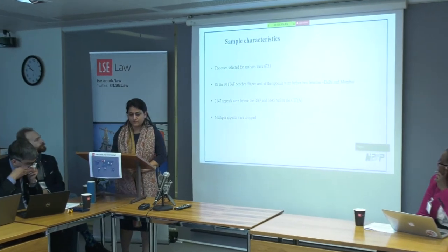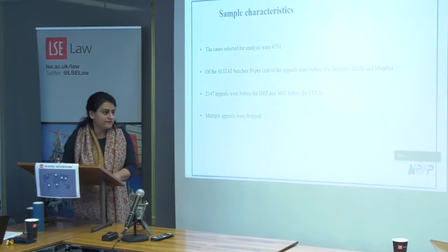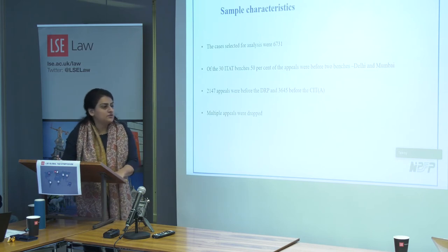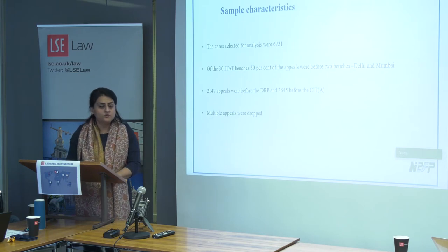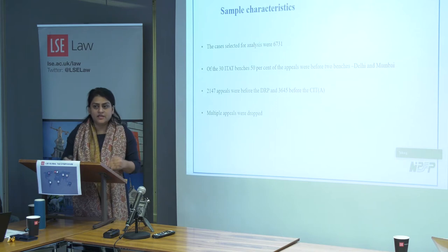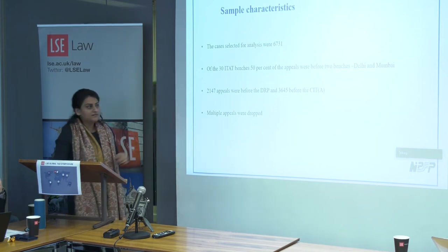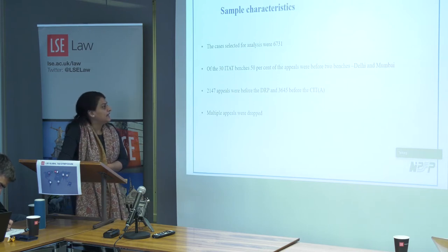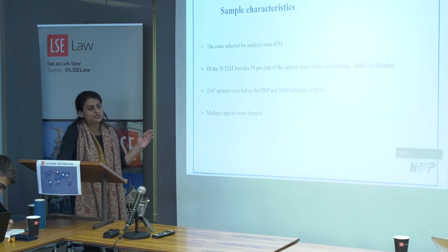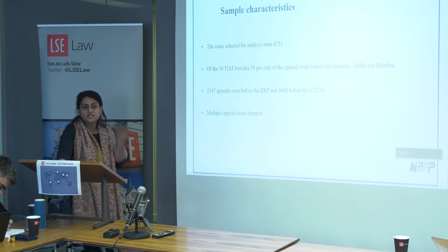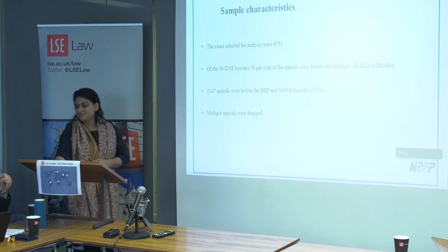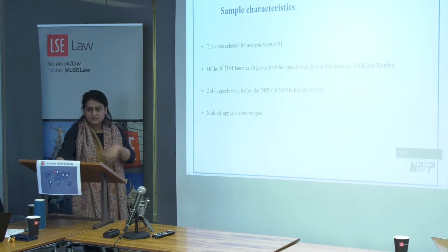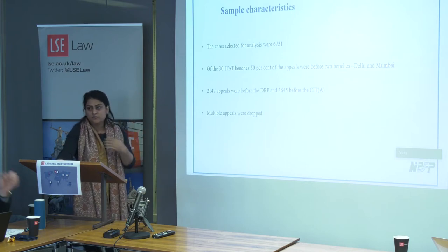To give a sense of the dataset: we took about 6,731 case orders available on the Appellate Tribunal's webpage and used natural language processing to extract specific details relevant to our research questions. In India there are about 30 benches of the Tribunal across 30 different states, but predominantly two cities account for more than 50% of cases. We have a fairly equal number of cases that went to the DRP and to CIT appeals, which allows us to assess whether the alternate dispute resolution mechanism really worked.